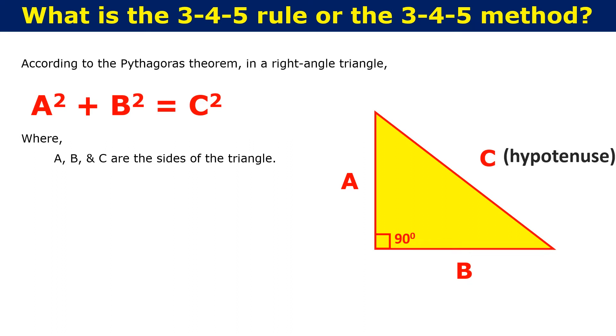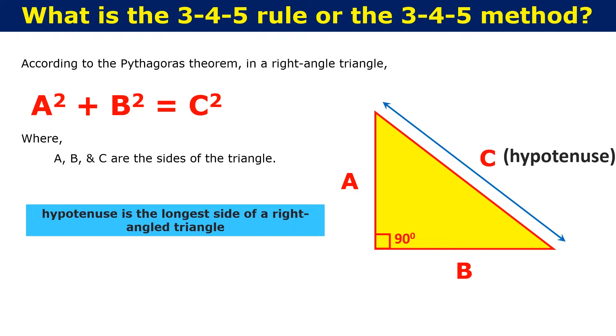Also note that c is the hypotenuse of a triangle. In geometry, a hypotenuse is the longest length of a right-angled triangle, the side opposite to the right angle.